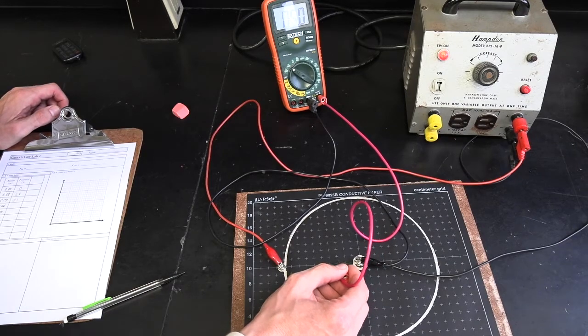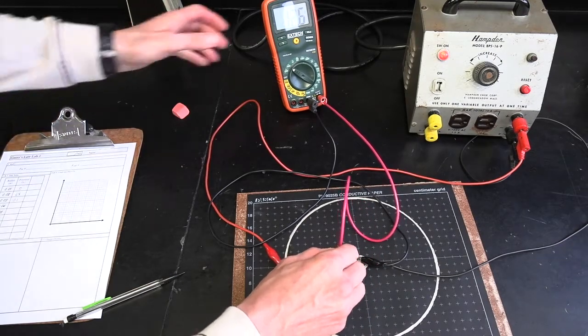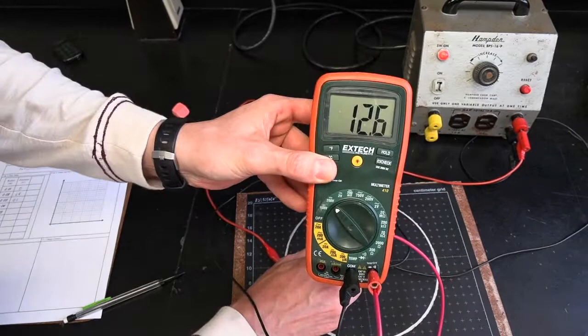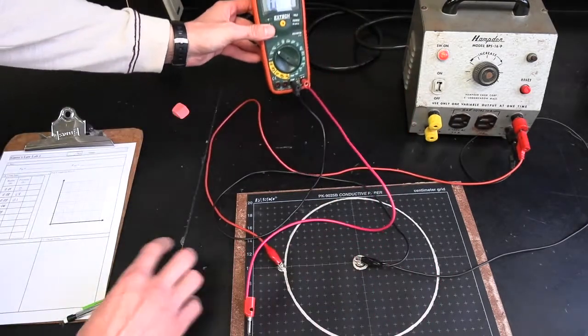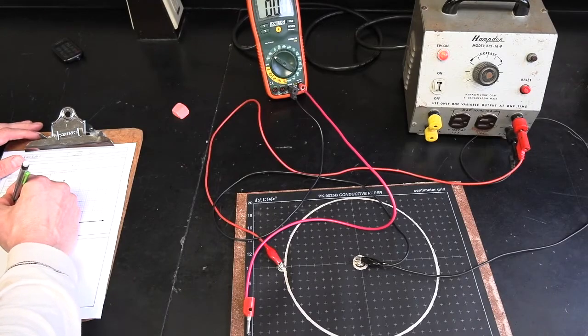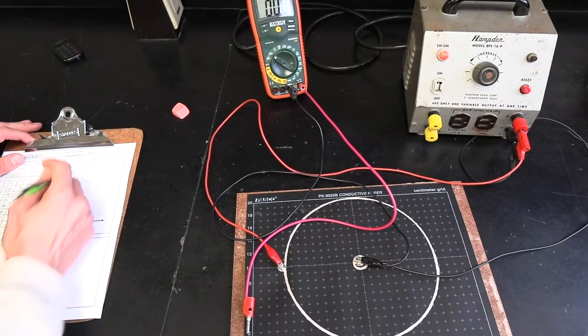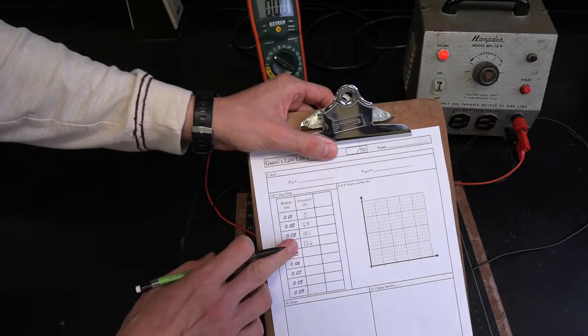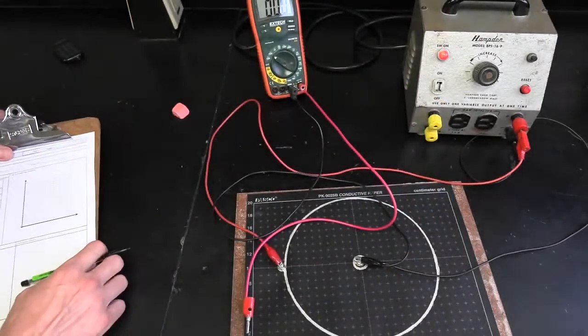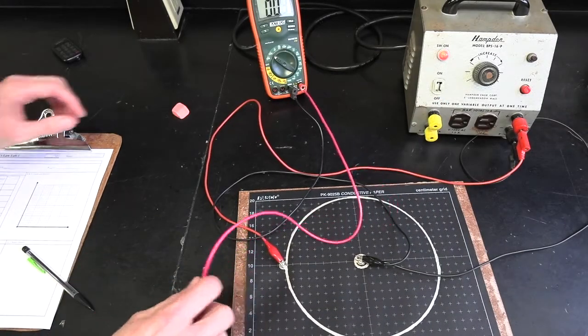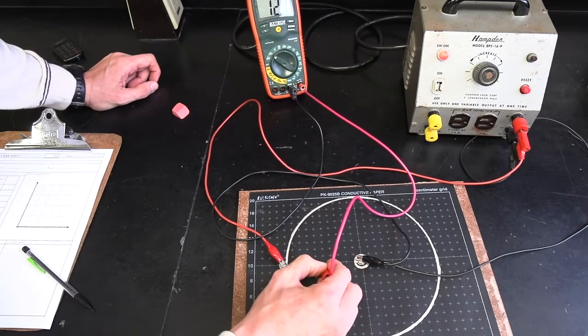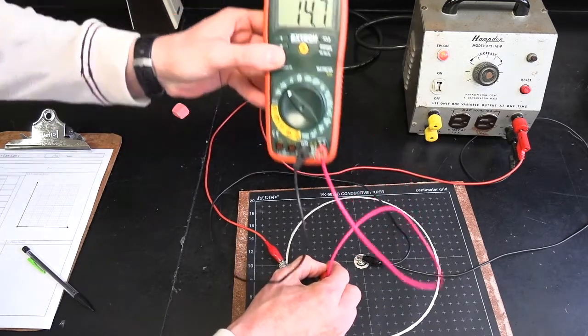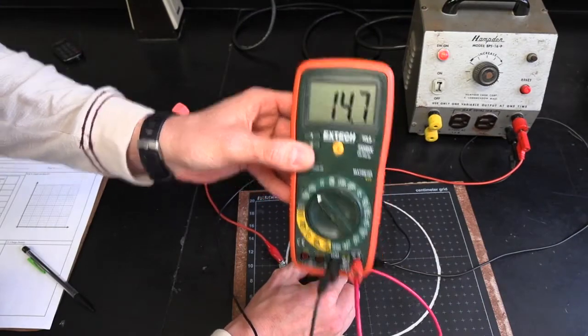1, 2, 3, 4, right there. Looks like I got about 12.6. It's lingering most on. So I will write 12.6 right here. And then at 5 centimeters, so here's 1, 2, 3, 4, 5 right there. Looks like we're at 14.7 voltage.